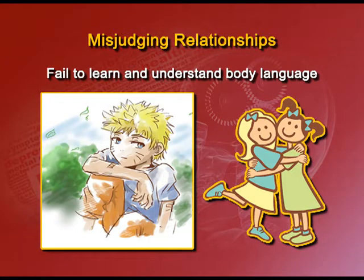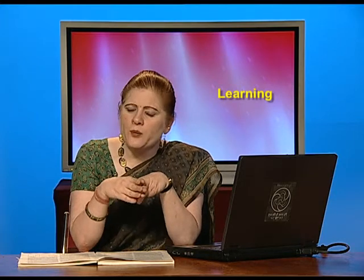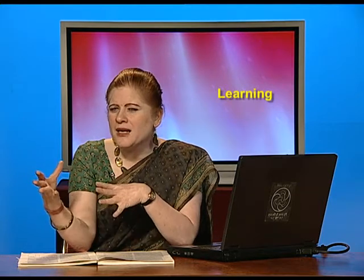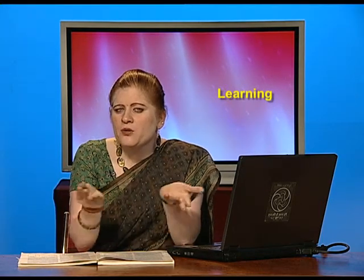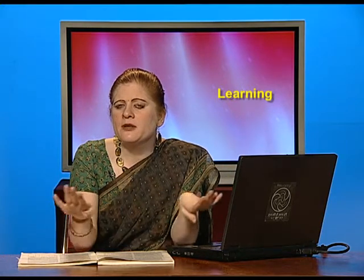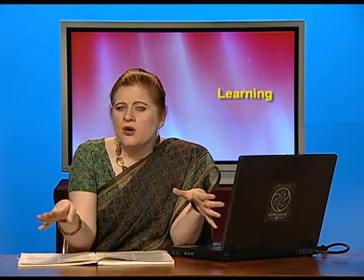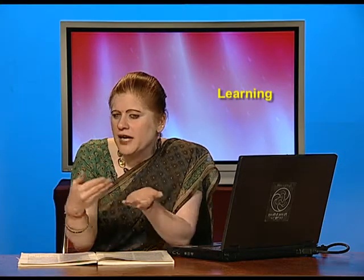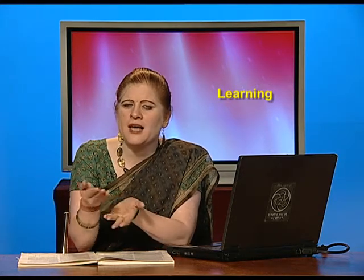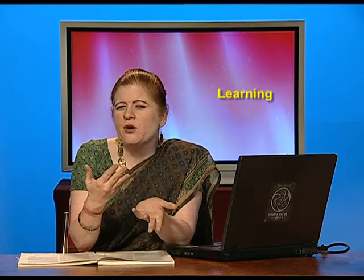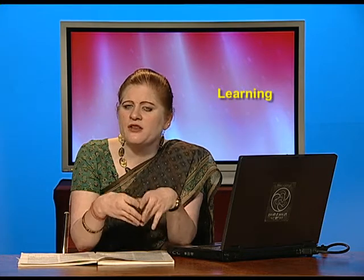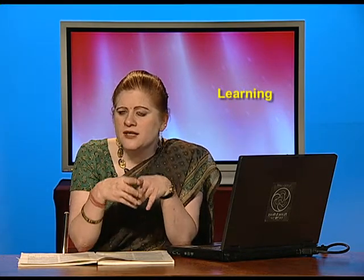Misjudging relationships and not being able to understand body language is another very major problem with some of the learning disabled. They are not able to differentiate between anger and love, or between who is friendly to them and who is abusive. A hug may be perceived as something violent — so if you try to be friendly to a learning disabled person, they might actually become very abusive or even violent. You must take care and not ridicule them for their behavior, because this is a disorder they face.